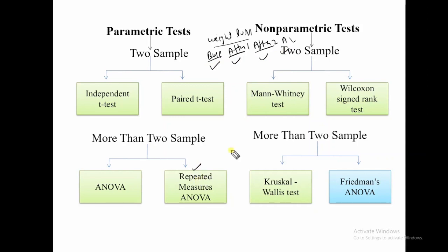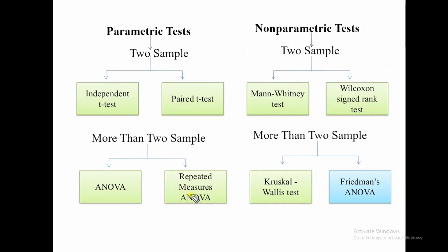In medical science, a doctor can take the patient's observation after one week, after two weeks, after three weeks, after four weeks. Repeatedly, he is taking the observations of the patients. In this case, we apply repeated measures ANOVA. The paired t-test condition is limited to only two observations — before treatment and after treatment. But if we are taking repeated observations of the same respondent, then we use repeated measures ANOVA.